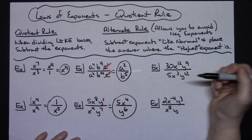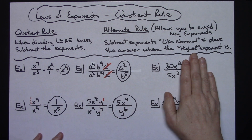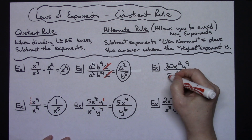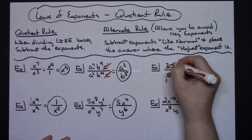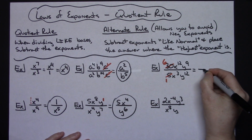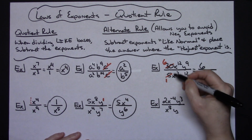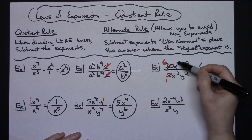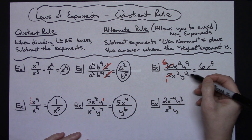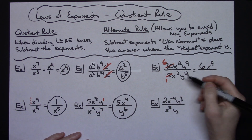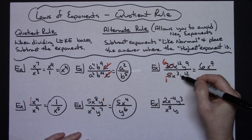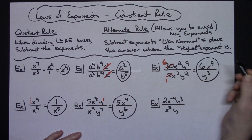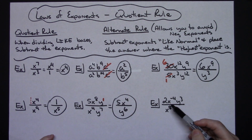Here we have coefficients in both numerator and denominator. Treat them as a fraction: thirty over five reduces to six. For the x's: twelve minus three gives x to the ninth in the numerator since twelve is bigger. For the y's: twelve minus nine gives y to the third in the denominator because y to the twelfth is in the bottom. The final answer is 6x to the ninth over y to the third.